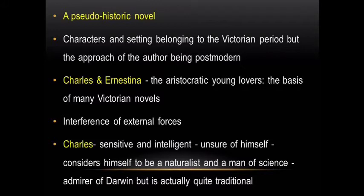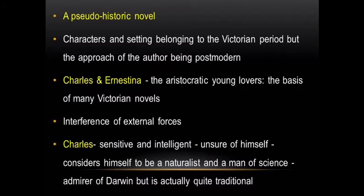Now let's find out how John Fowles has made The French Lieutenant's Woman a pseudo-historic novel by making the characters and setting belong to the Victorian period while the author's approach is postmodern. First of all, the pair of Charles and Anastina Freeman — the aristocratic young lovers — create a sort of romantic story which is the basis of many Victorian novels. The external forces, including the dark lady, interfere in the romantic situation around Charles and Anastina and keep them apart.